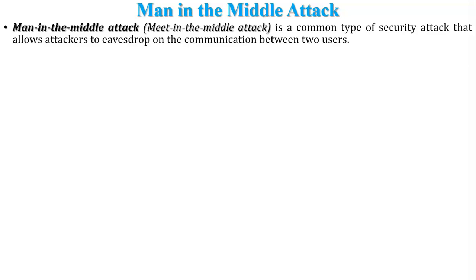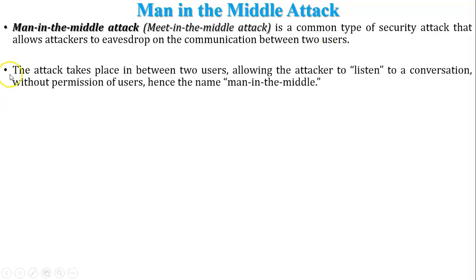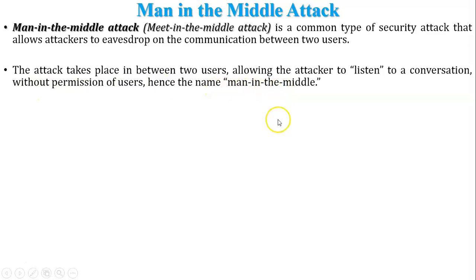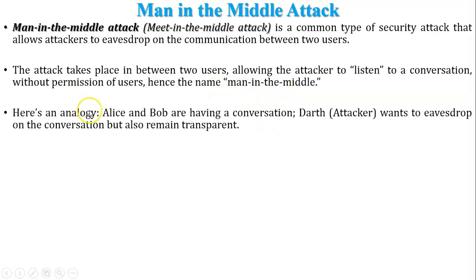This is called the man-in-the-middle attack. The attack takes place between two users, allowing the attacker to listen to a conversation. Both users cannot detect that attacker, but the attacker can join the conversation without the knowledge or permission of the users. Hence the name: man-in-the-middle.